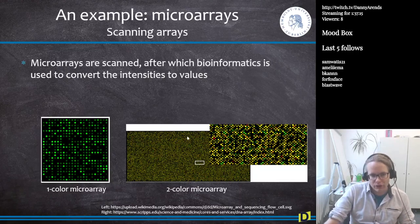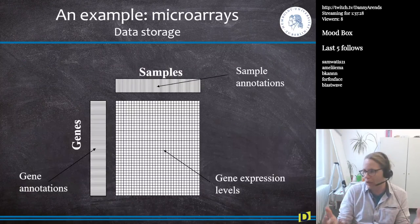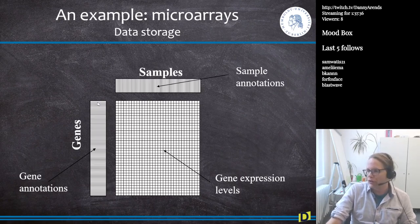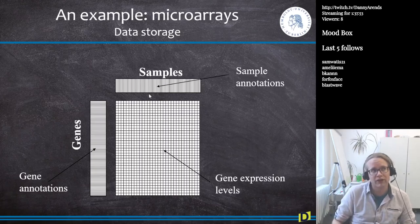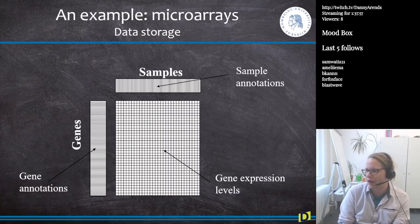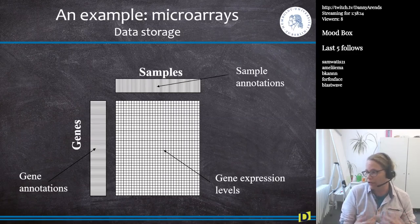When microarrays are scanned, we get pictures that need to be converted into intensity values, because we can't just use the picture — we need a matrix with numbers. Using software tools, we go from the picture into something called the gene expression matrix. Generally, on the rows you have the different genes, and on the columns you have the different samples; in the middle is the gene expression level. This generally fits in Excel, although 10 years ago Excel only allowed around 16,000 rows, so you had to use big comma-separated files instead.